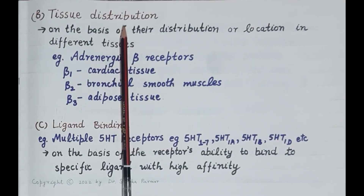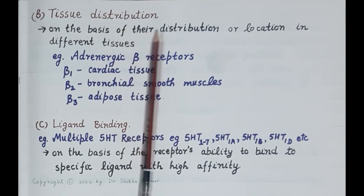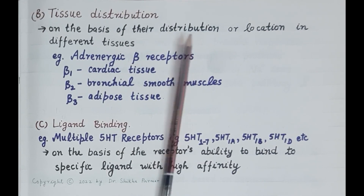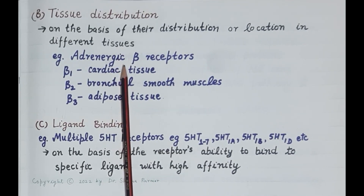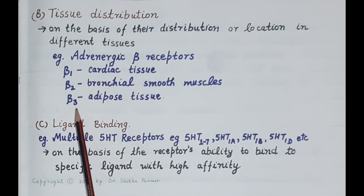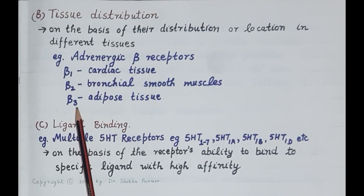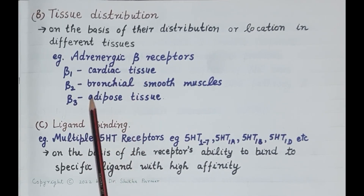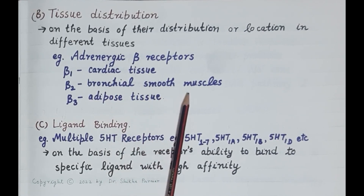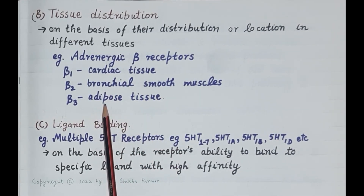The second criterion is based on the distribution or location of receptors in different tissues or organs. Different classes of receptors are located in different regions. For example, adrenergic beta receptors are subclassified as beta-1, beta-2, and beta-3 based on differences in their distribution: beta-1 receptors are in cardiac tissue, beta-2 receptors are in bronchial smooth muscles, and beta-3 receptors are in adipose tissue.